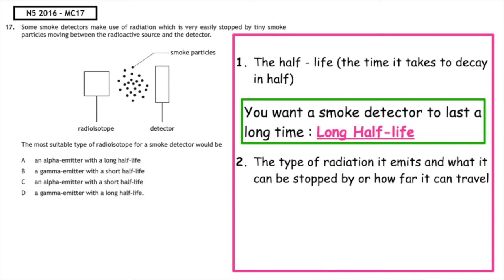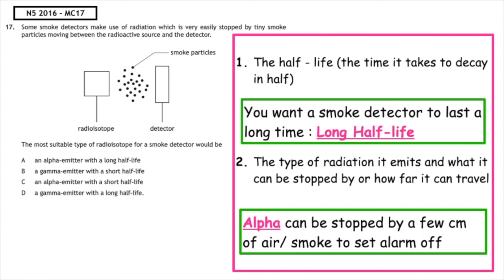In this question, it tells us that it can be stopped by tiny smoke particles, and we know alpha can be stopped by a few centimeters of air or smoke to set the alarm off. So the most suitable type of radioisotope for a smoke detector would be an alpha emitter with a long half-life, multiple-choice answer A.